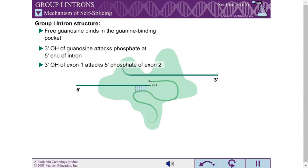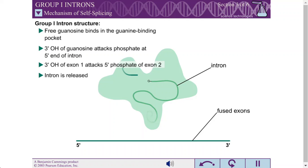The freed 3' hydroxyl of the exon then attacks a phosphate at the 5' end of the other exon. This fuses the two exons and releases the intron.